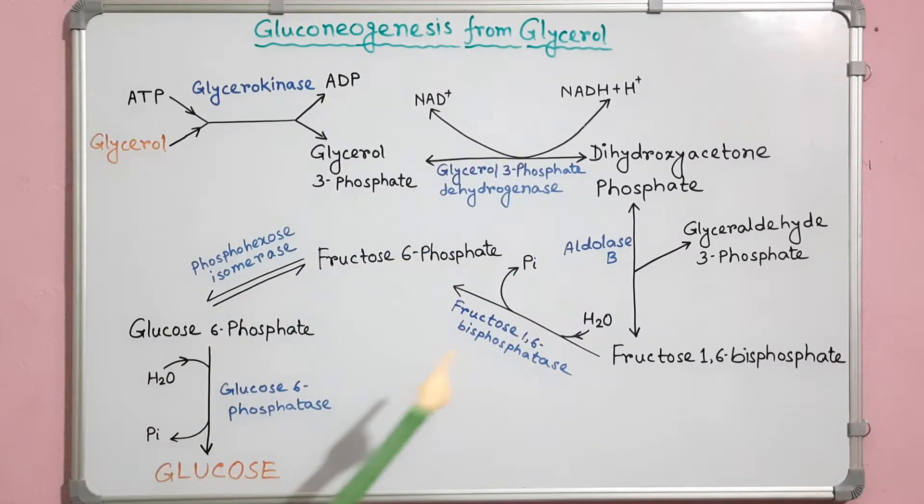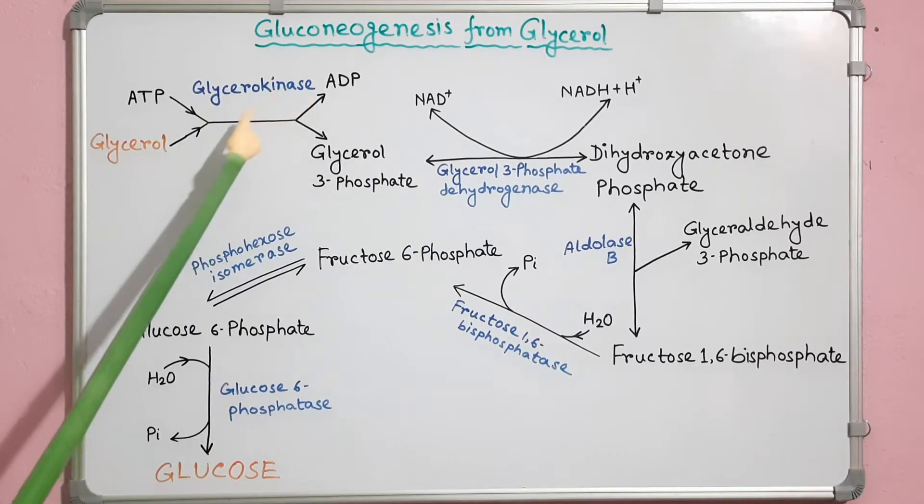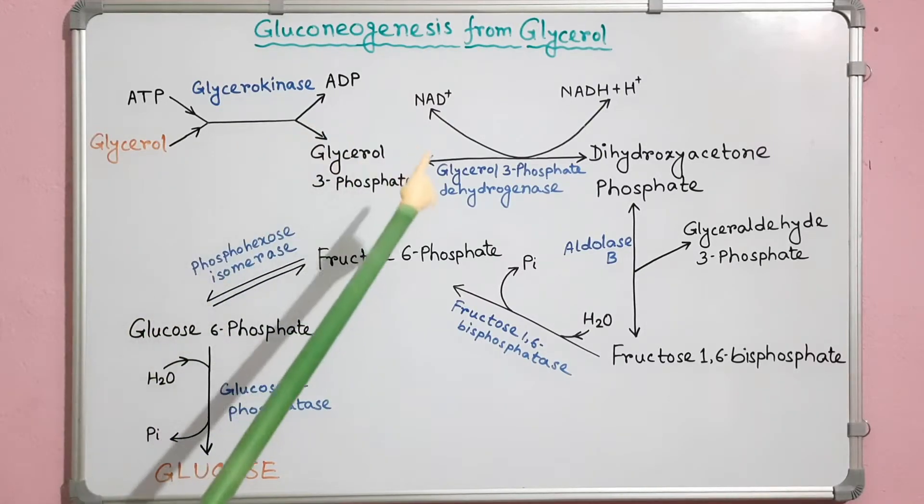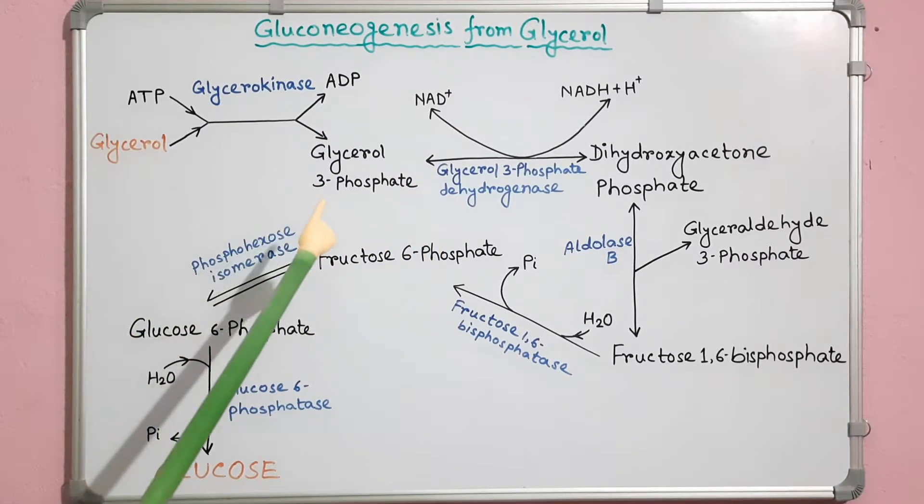In this diagram I have shown how glucose is formed from glycerol. This process occurs in the hepatic and renal cytosol.